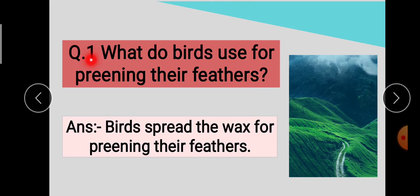Question number 1 is: What do birds use for preening their feathers? Question है, keywords - अपने feathers को preening करने के लिए क्या use करते हैं? So answer है: Birds spread the wax for preening their feathers. Keywords जो है, wax को spread करते हैं अपने feathers को preening करने के लिए.